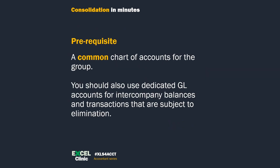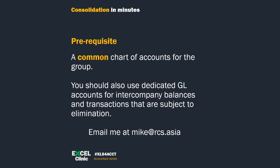What is the prerequisite to consolidate the trial balance? To do a meaningful TB consolidation, all entities within the group should adopt a common chart of accounts. It may seem pretty intuitive, but to be honest, I don't see that everywhere - especially in SMEs and startups, where people move things very fast and tend to overlook the importance of having a common chart of accounts. If you don't have one and need help to set up one, drop me an email. You should also use dedicated GL accounts for intercompany balances and transactions that are subject to elimination. I'll explain why later in this video.